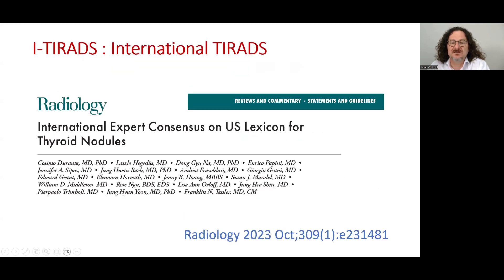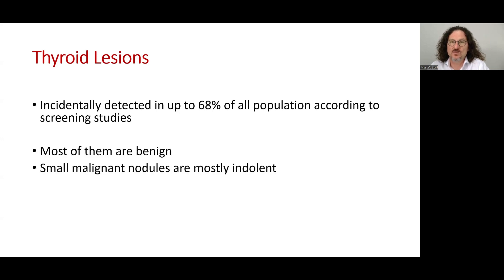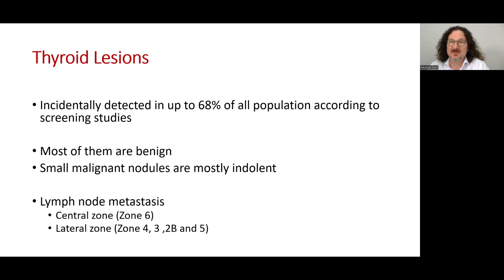Recently, in October 2023, they published a review defining the lexicon for thyroid nodules. Thyroid lesions are incidentally detected in up to 70% of all population. Most of them are benign. Small malignant nodules are mostly indolent, but may metastasize to lymph nodes, central zone or lateral zone.